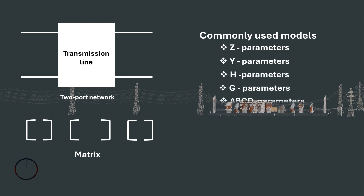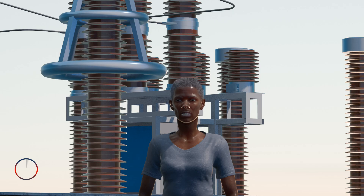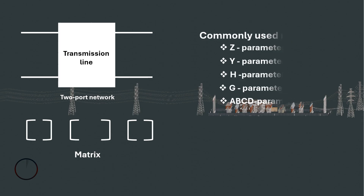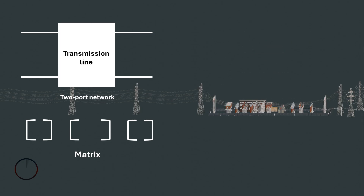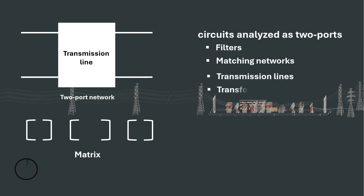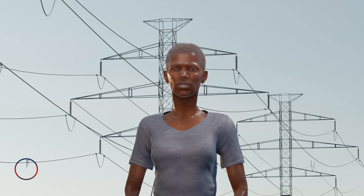H parameters, G parameters, and ABCD parameters. These are all limited to linear networks since an underlying assumption of their derivation is that any given circuit condition is a linear superposition of various short-circuit and open-circuit conditions. They are usually expressed in matrix notation and establish relations between variables. Examples of circuits analysed as two-ports are filters, matching networks, transmission lines, transformers, and small signal models for transistors such as the hybrid pi model.